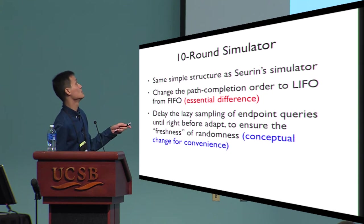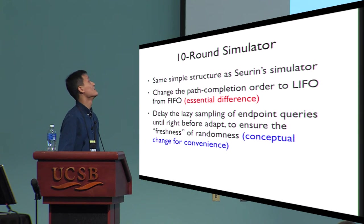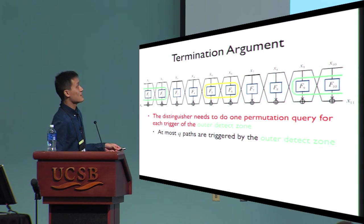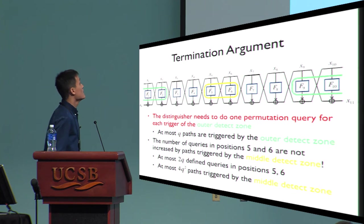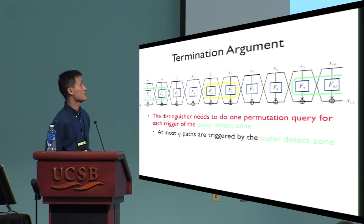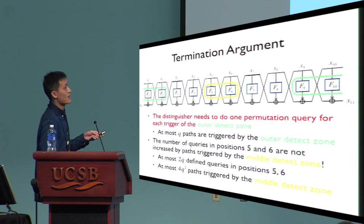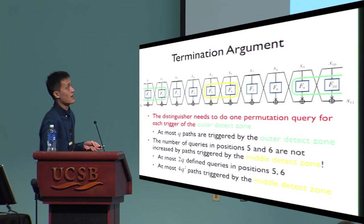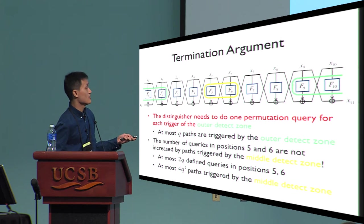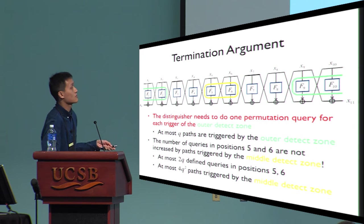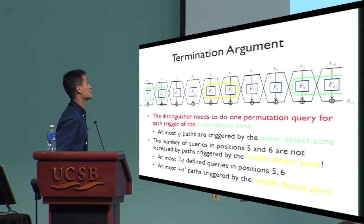Since we have the same structure as Seurin's simulator, we can use the exact same termination argument. The outer detect zone is very unlikely to be triggered unless the distinguisher has queried the permutation, so the number of paths triggered by the outer detect zone is at most Q in most executions. The number of queries in the two middle rounds are not increased by paths triggered by the middle detect zone — only by distinguisher queries or outer-detect-zone-triggered paths, each at most Q. Therefore there are at most 2Q defined queries in positions five and six, so at most 4Q² paths can be triggered by the middle detect zone.